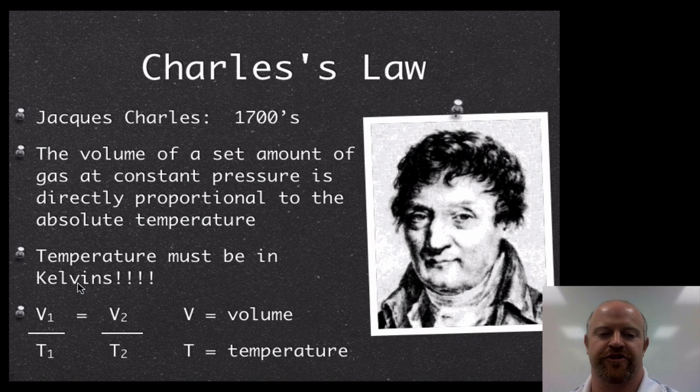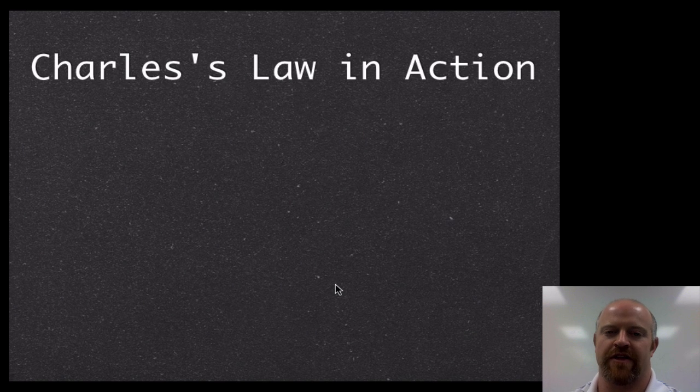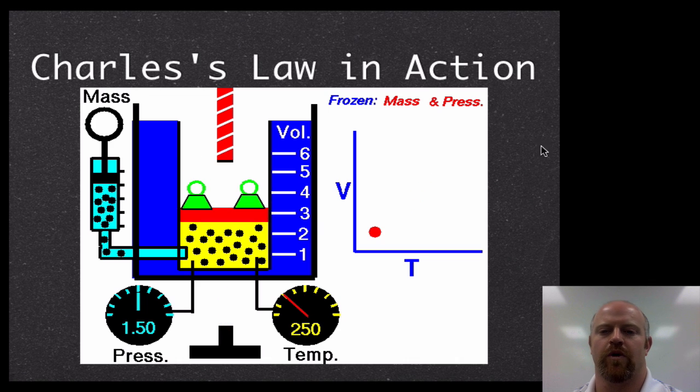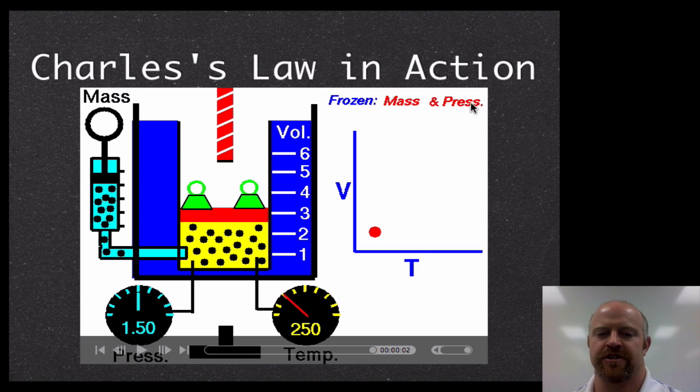You don't always need Kelvins for all of our gas laws, but a good rule of thumb is for the rest of this unit, just make sure every time you see temperature it's in Kelvins, because we're going to need it for most of the time. And it's easier to remember to always put it that way, versus trying to decipher when you need it and when you don't. So, Kelvin temperature for sure, relationship is V1 over T1 equals V2 over T2. Let's take a look at how that works in action. So in this scenario, we are going to hold our mass and our pressure constant.